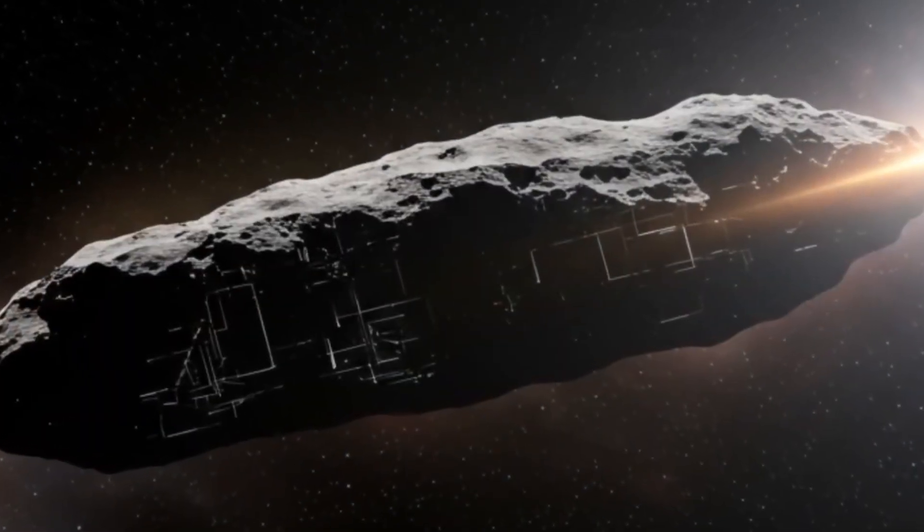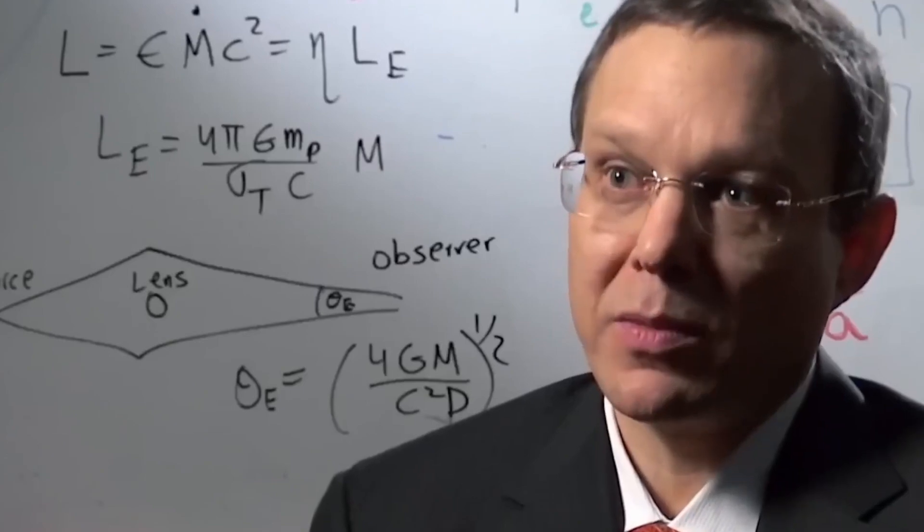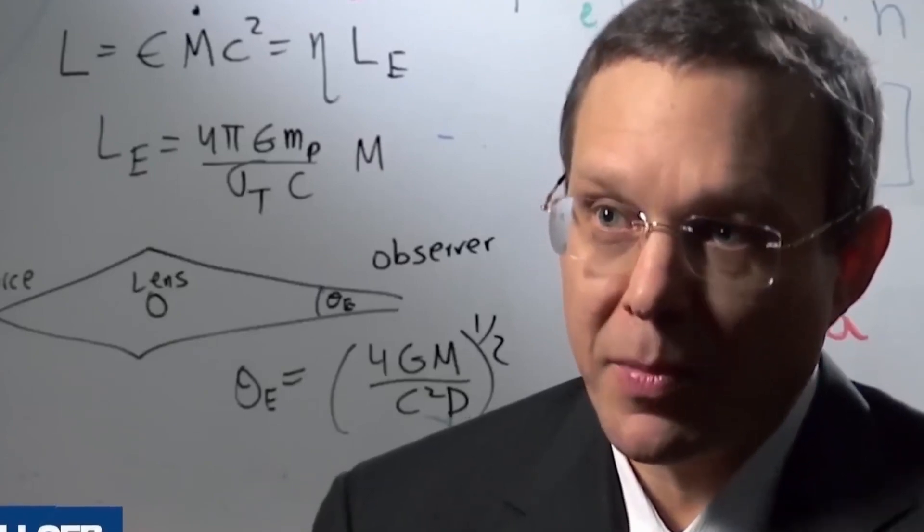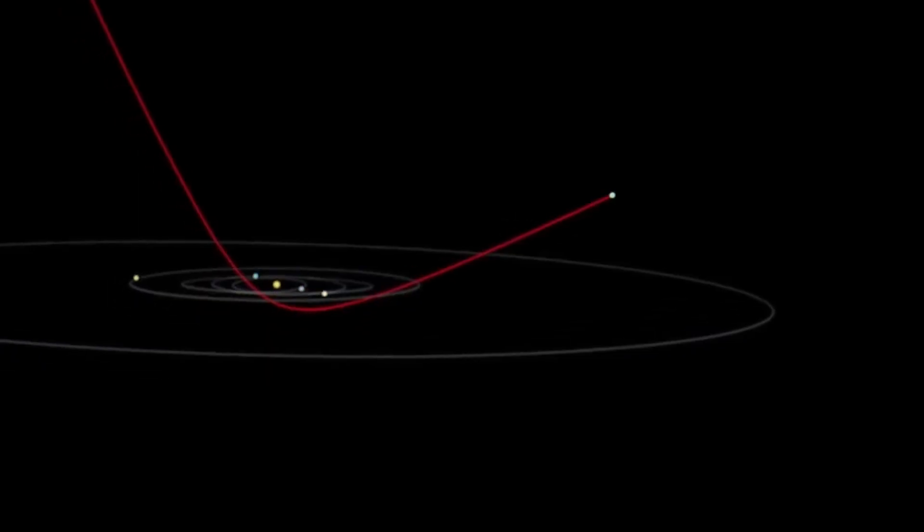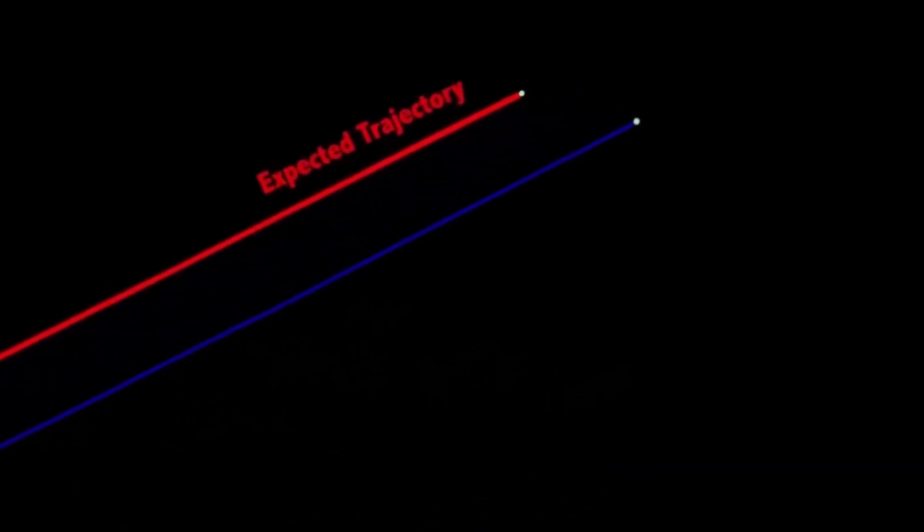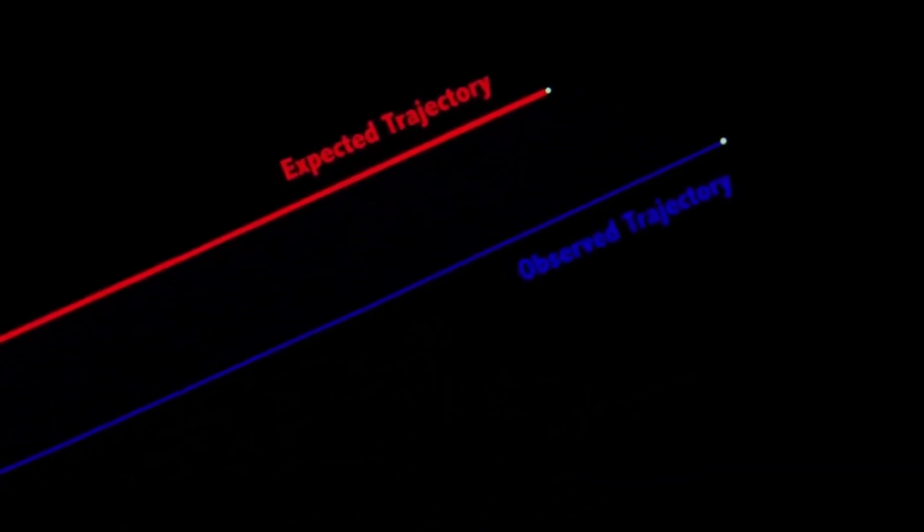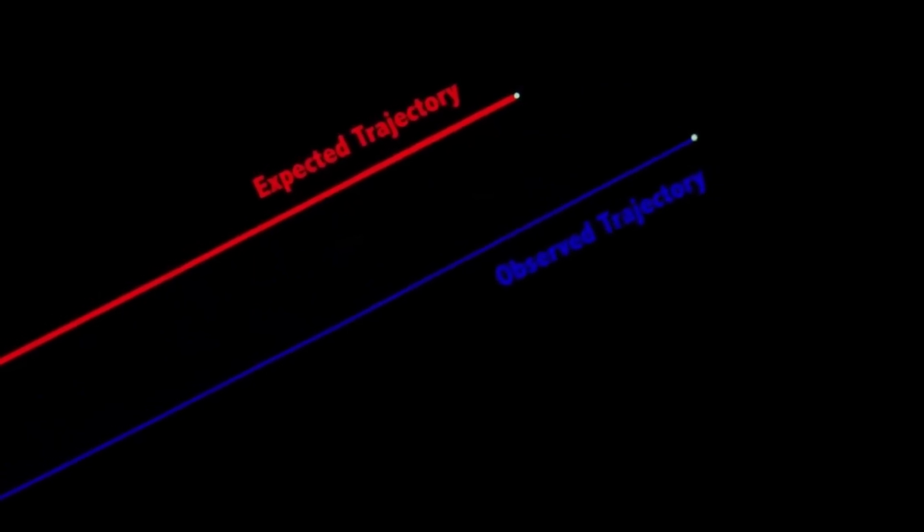3E Atlas immediately stood out due to its strange trajectory and unusual brightness. Some astronomers believe it is a comet, others an asteroid, and still others, such as renowned Harvard professor Avi Loeb, do not rule out an artificial origin, as in the case of Oumuamua. This is because this object is also accelerating in a way that cannot be explained by gravity alone. Could this be the second potential extraterrestrial probe?